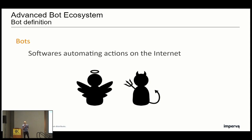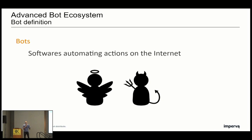First, a definition about bots. Bots are softwares that automate actions on the internet. You have good bots, for example the Google bot that crawls the internet in order to improve its search engine. And you have malicious bots, for example vulnerability scanners that scan all servers available on the internet searching for vulnerable ones. The main difference between the two is the consent of the server being targeted by those bots.